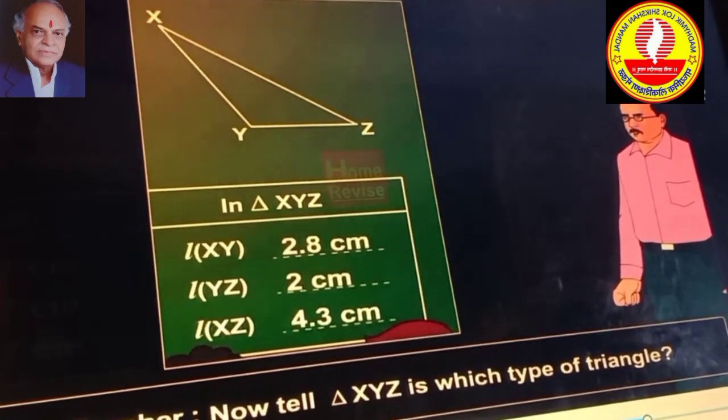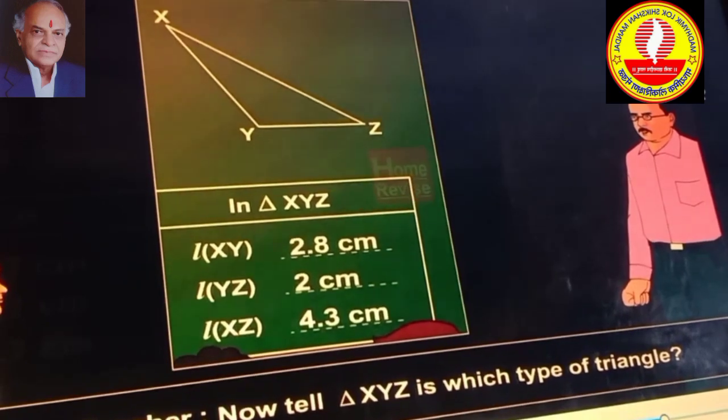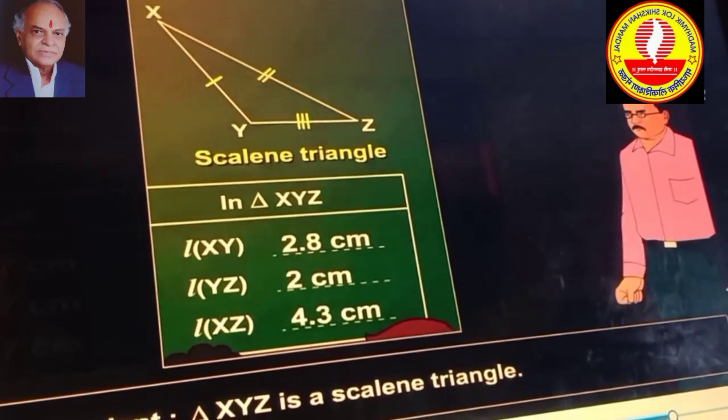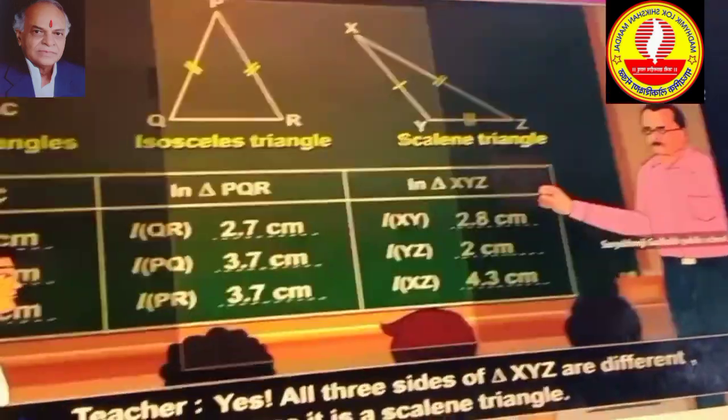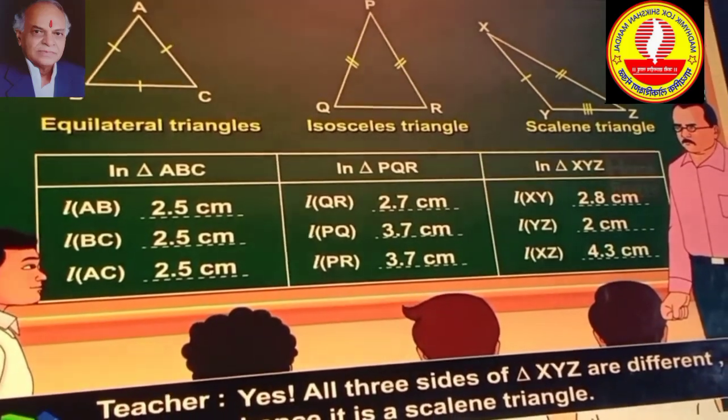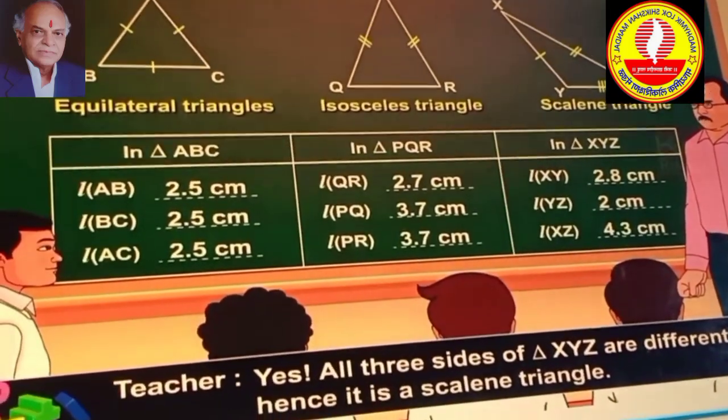Now tell, triangle XYZ is which type of triangle? Triangle XYZ is a scalene triangle. Yes, all three sides of triangle XYZ are different. Hence, it is a scalene triangle.